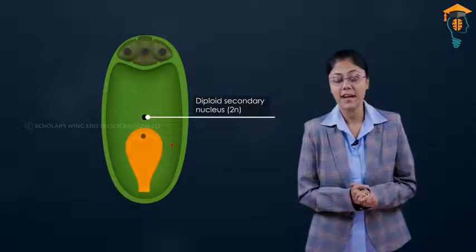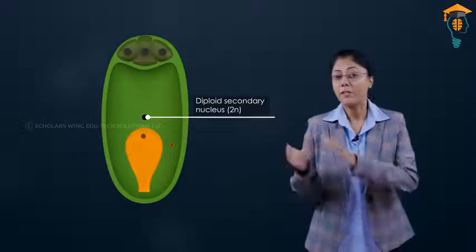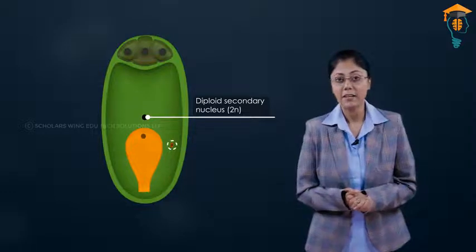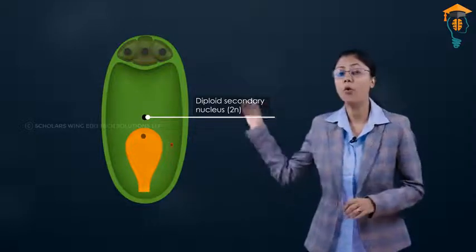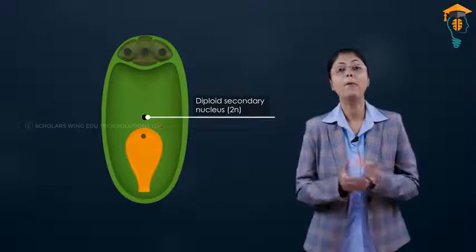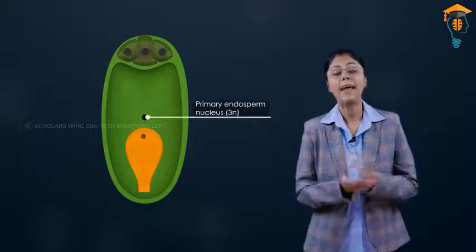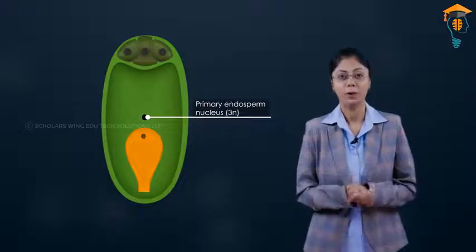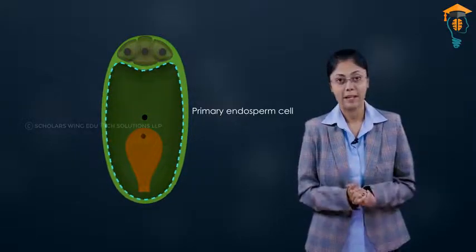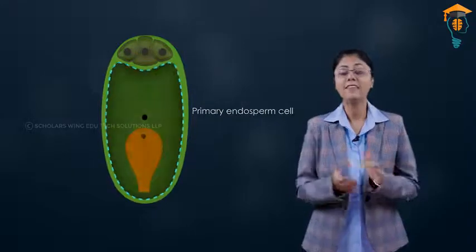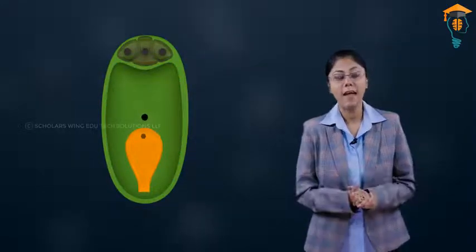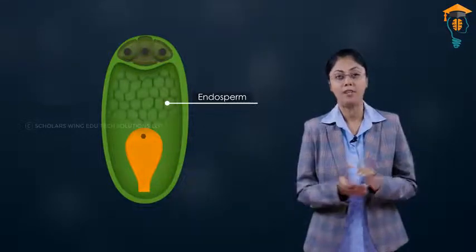The other male gamete that is released will go and it will fuse with the diploid secondary nucleus and it will form the primary endosperm nucleus, which will be triploid. So the central cell which contains the primary endosperm nucleus will now be called the primary endosperm cell. And this cell will undergo mitosis and it will form the endosperm after some time.